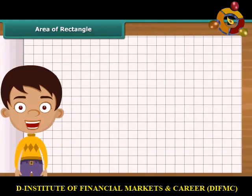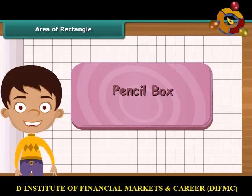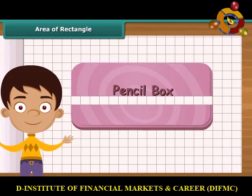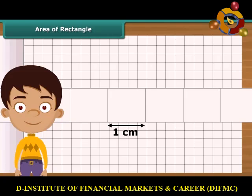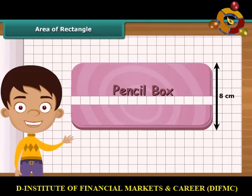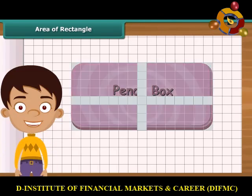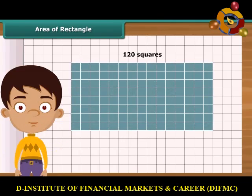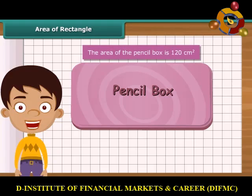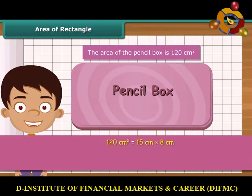Let us find the area of a rectangle by counting squares. Take a rectangular pencil box and place it on squared paper. The length of the box is 15 centimeters — arrange 15 squares of side 1 centimeter along its length. The breadth of the box is 8 centimeters — arrange 8 squares of side 1 centimeter along its breadth. Altogether, 120 squares have been arranged, meaning the area of the pencil box is 120 square centimeters, which is 15 centimeters multiplied by 8 centimeters. So the area of any rectangle is obtained by multiplying its length and breadth.